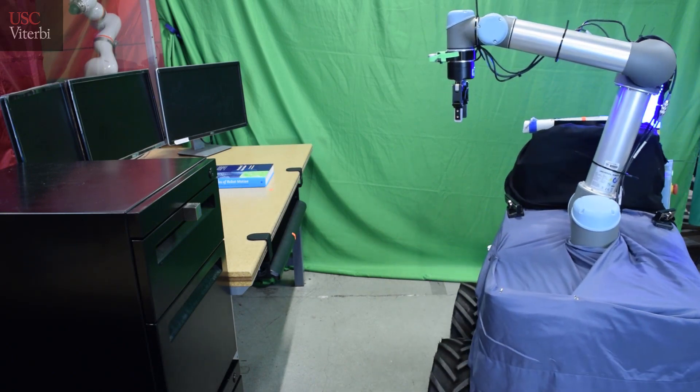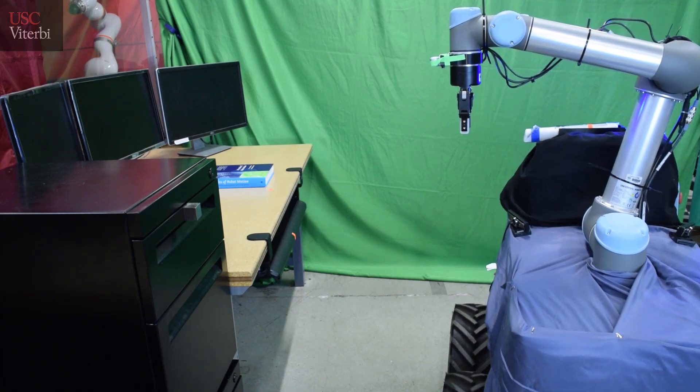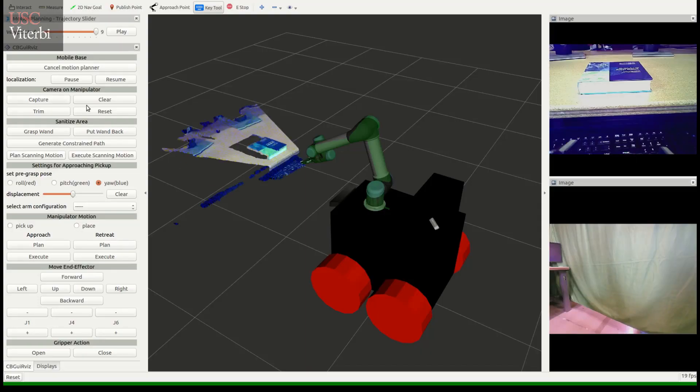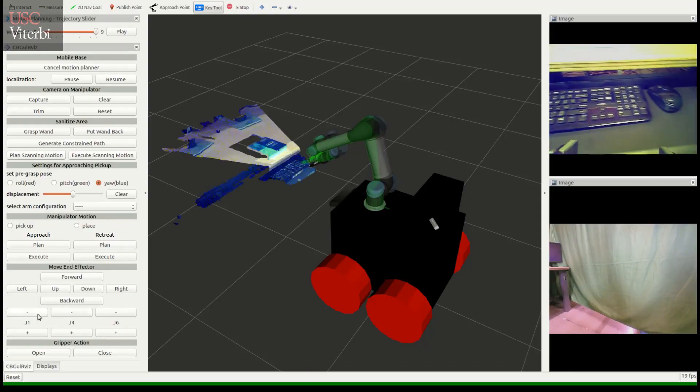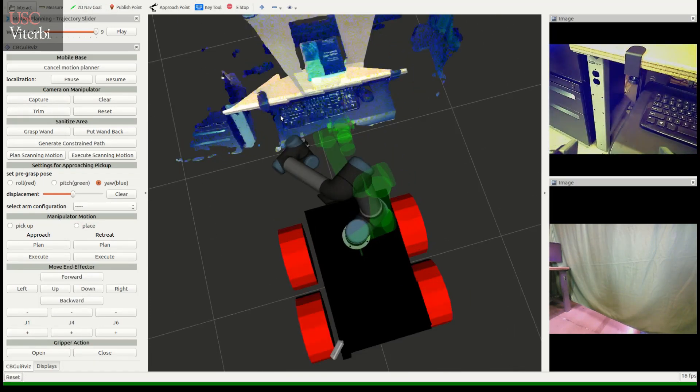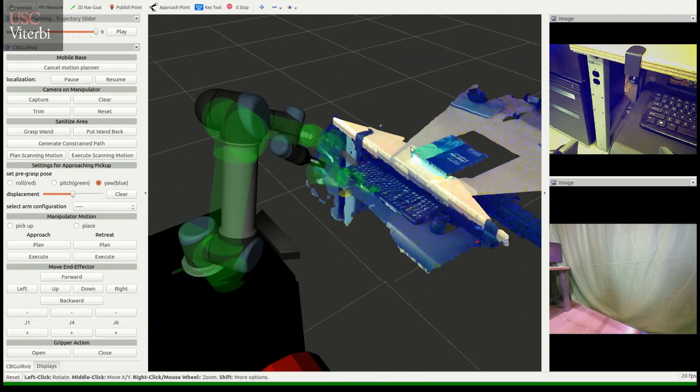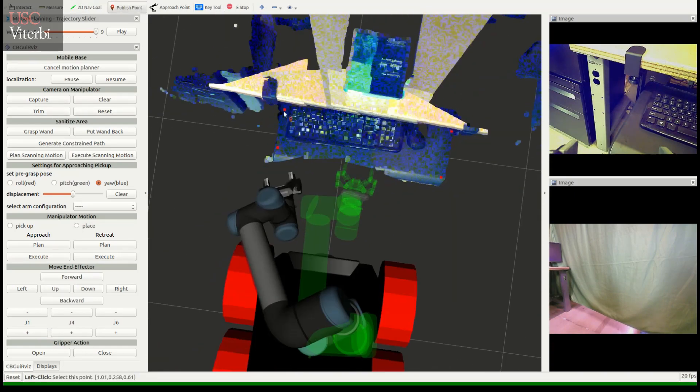The user manually drives the robot around using these cameras. As the robot approaches the area to disinfect, the user maps the local environment using the stereo camera. Then, the user makes high-level decisions as to which area to disinfect and what object to move. The robot automatically plans and executes these actions.